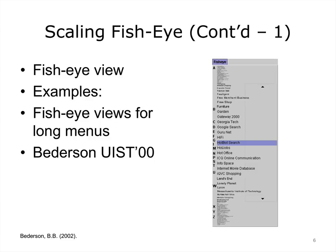Fisheye view approaches have been applied in different areas. Here is an example of using a fisheye view method on a list of items. As you can see, a few items are in focus and the rest of the items are shown in a condensed way. This view allows users to examine items of interest while reminding them how long the list is overall and where they are within it.